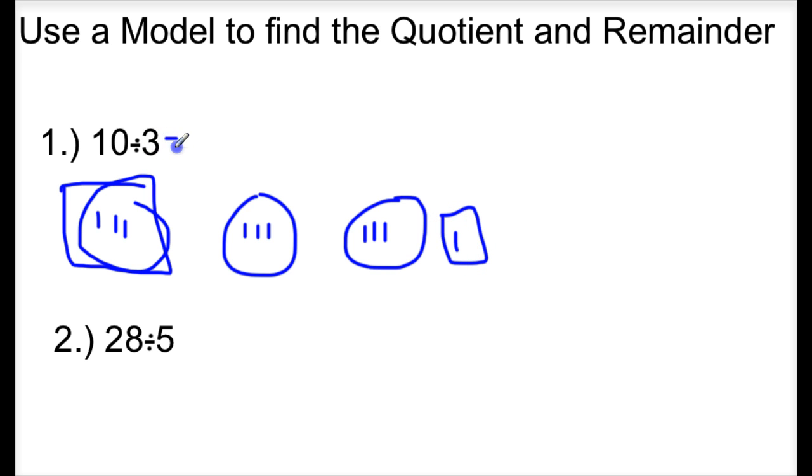So for this example, we have 3 because there is 1, 2, 3 in each group. So it's 3 in each group, and then our remainder is 1.